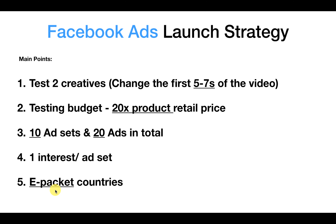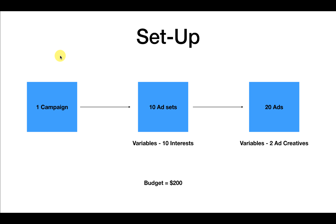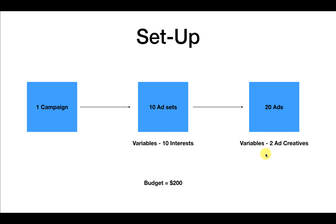Finally we're going to be targeting ePacket countries because this way you get a reasonably good conversion rate and the shipping time is lower compared to random countries worldwide where shipping can take 40-plus days. So to summarise the overall campaign setup: one conversion campaign optimising for purchase, divided into 10 different ad sets with a budget of $200 — so $20 per ad set. The variable at the ad set level is a different interest for each ad set, giving 10 interests in total, and within each ad set we'll have two different ads, so 20 ads total, each with a $10 effective budget.